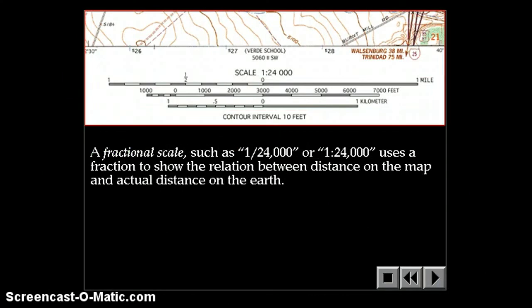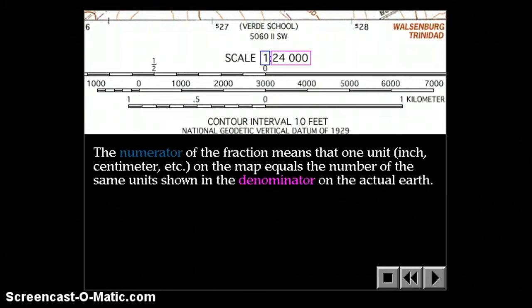A fractional scale, such as 1 to 24,000, uses a fraction to show the relation between the distance on the map and the actual distance on the Earth. The numerator of the fraction means that one unit on the map equals the number of the same units in the denominator on the actual Earth.